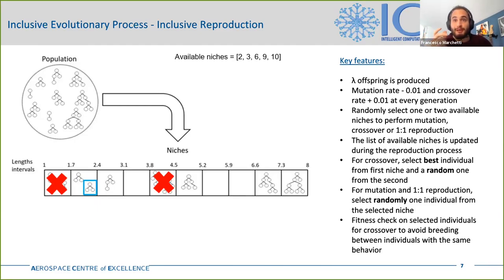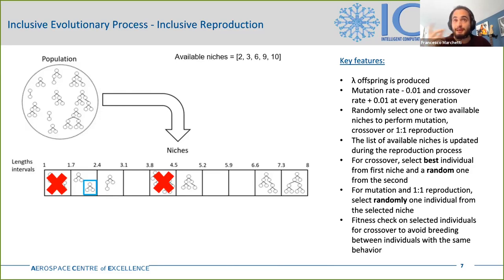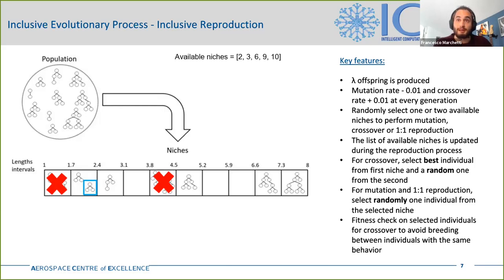Two other features implemented in the IGP are a dynamic change of the crossover and mutation rates, and the fitness check of the individuals chosen for crossover. The process starts with a high mutation rate and a low crossover rate, and they are respectively decreased and increased as the process goes on. This is done to promote exploration at the beginning of the evolutionary process and exploitation towards the end. Regarding the fitness check, it is performed on individuals chosen for crossover to avoid combining individuals with the same behavior. So if two individuals with the same fitness values are selected for crossover, the niche selection is repeated until two different individuals are selected.